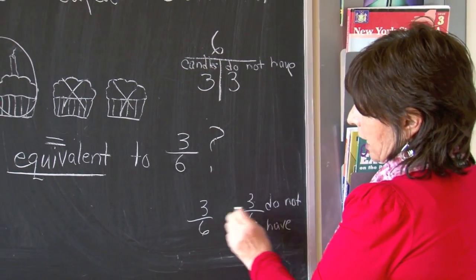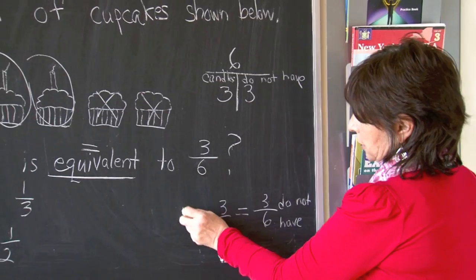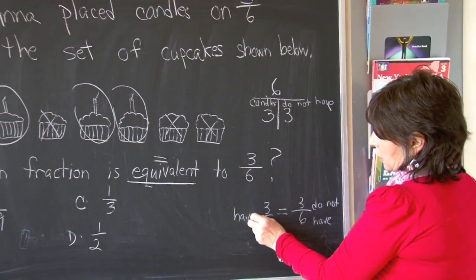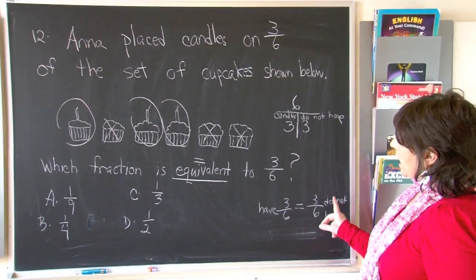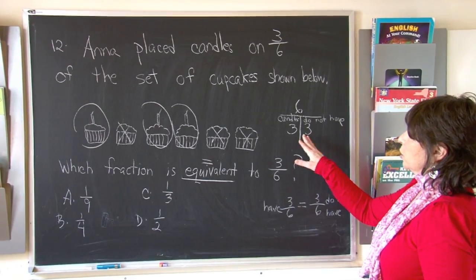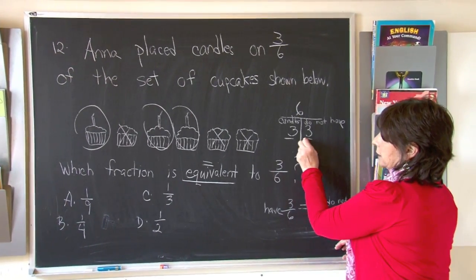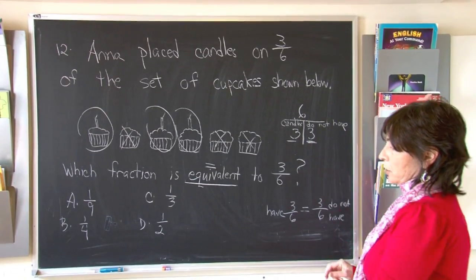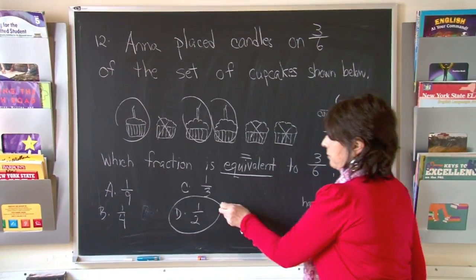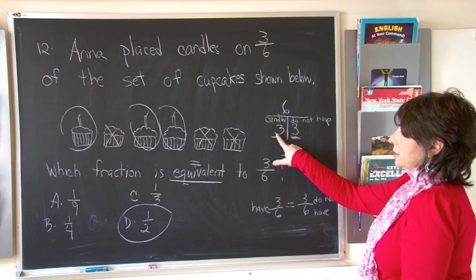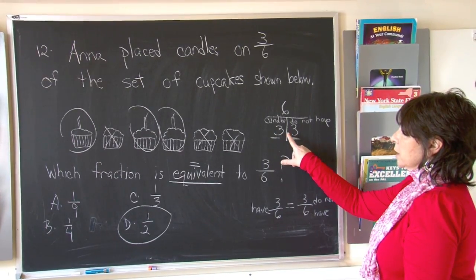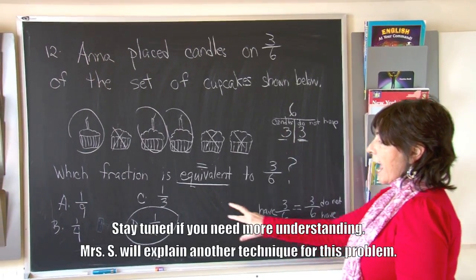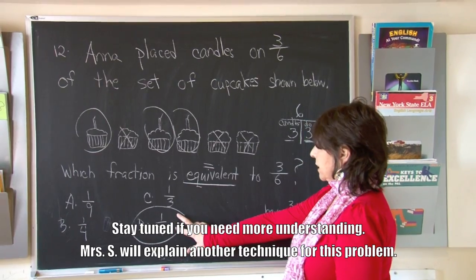So those are equivalent. Obviously, three-sixths equals three-sixths. So how do we figure out? Well, three plus three, those are equal parts. Only two equal parts. So the correct answer is one-half. Half of six is three. Three plus three equals six. Half of six is three.